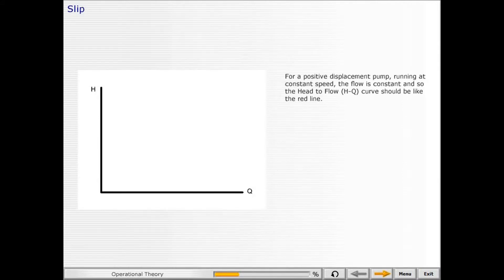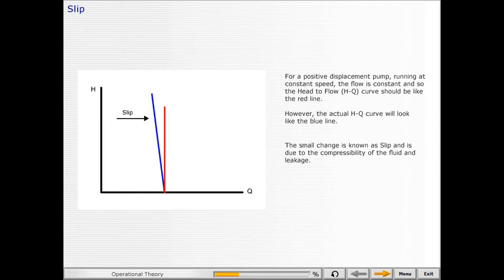For a positive displacement pump running at constant speed, the flow is constant, and so the head to flow curve should be like the red line. However, the actual head to flow curve will look like the blue line. The small change is known as slip, and is due to the compressibility of the fluid and leakage. This curve indicates that even small restrictions in the design flow rate can cause very high pressures to be delivered.